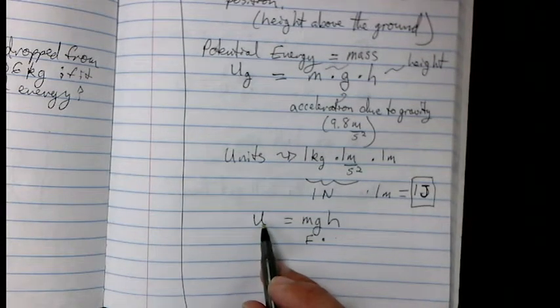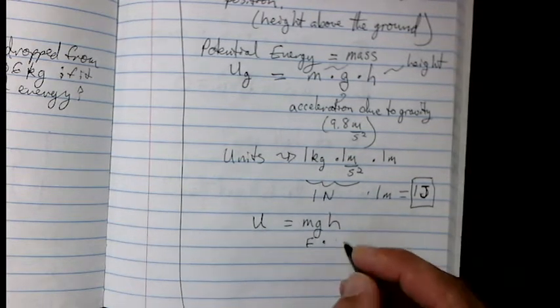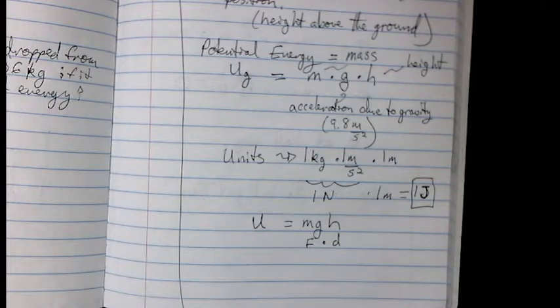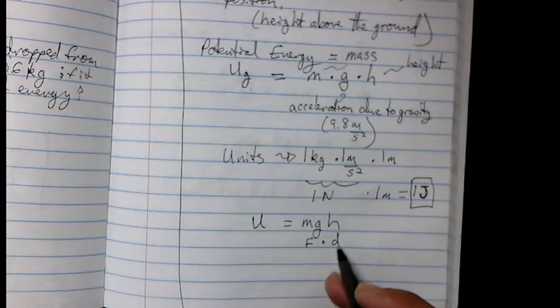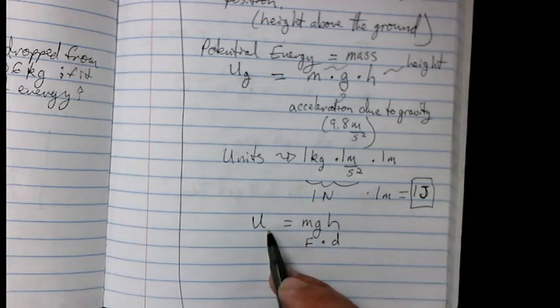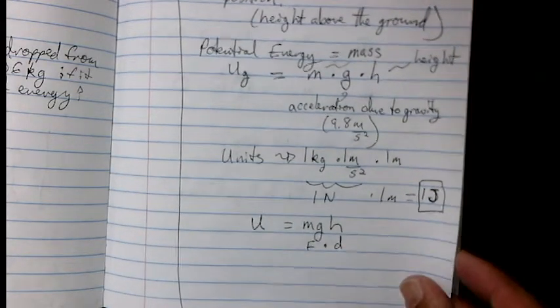What I also want to point out is U equals MGH. Well, MG is the force, and H is another way of saying distance. That's the equation for work. Work equals force times distance. So these are interlinked and interchangeable. They actually mean different things, because work is a force happening over a distance. U means there's a potential for there to be a force over a distance.